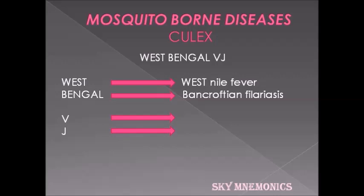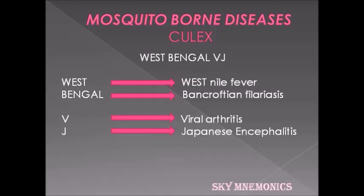'Bengal' means Bancroftian Filariasis. 'V' for Viral Arthritis. And 'J' for Japanese Encephalitis.